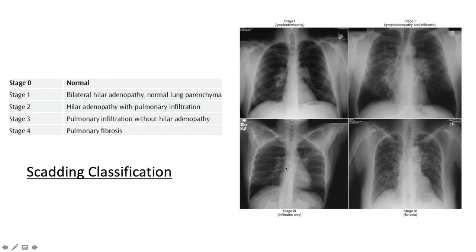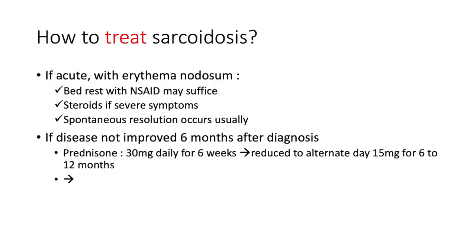Stage 3 has lost the bilateral hilar lymphadenopathy but retains the pulmonary infiltrates. Stage 4 is pulmonary fibrosis with significant dyspnea.